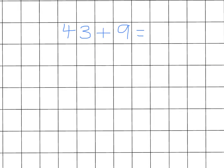When adding 9, we use the same strategy. We add 10, but this time we've added 10, so we've added too many. We only needed to add 9. We need to pay 1 back to the answer, which means subtracting 1. 53 take away 1 equals 52.